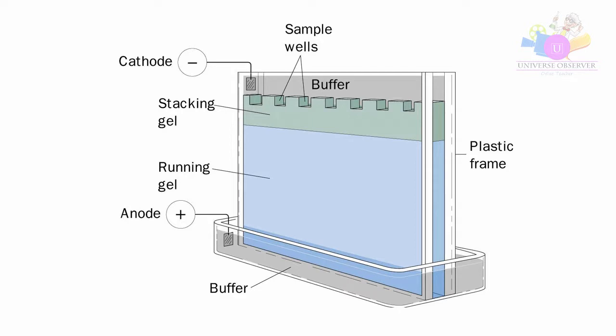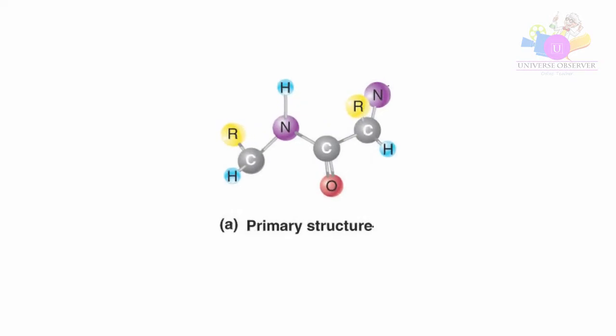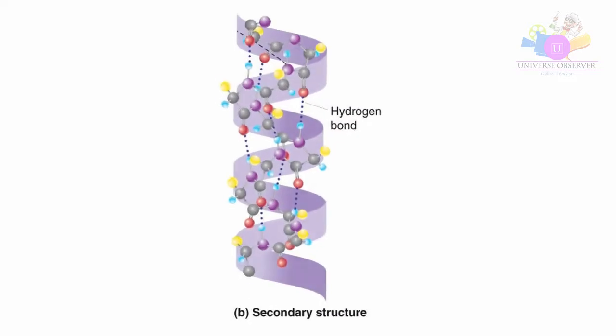We are using vertical gel system which contains two electrodes named as cathode and anode. When the current supply is connected, a current field is formed between these electrodes from negatively charged cathode to positively charged anode. There are four types of protein structures.